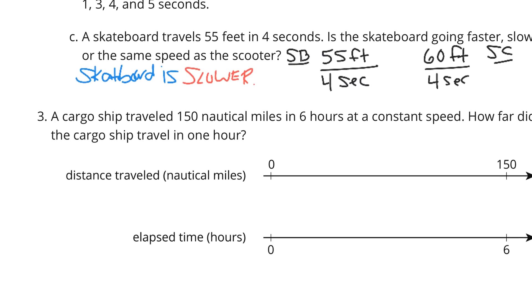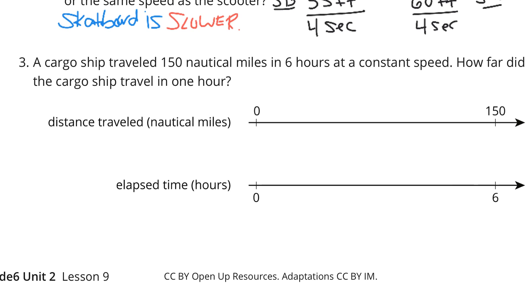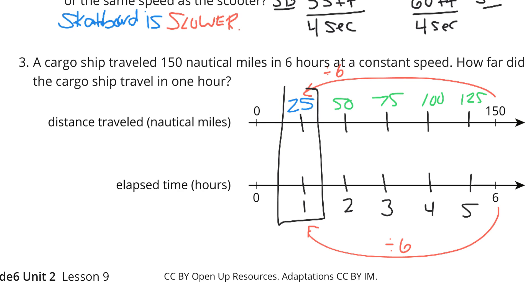Question 3. A cargo ship traveled 150 nautical miles in 6 hours at a constant speed. How far did the cargo ship travel in 1 hour? Well, a couple different ways of getting there. You could go 1, 2, 3, 4, 5, 6 and break it down here. But what I would simply do is, from 6 to 1, I'm dividing by 6. So from 150 to this spot, I'm also dividing by 6. When I take 150 divided by 6, I get 25. And if you wanted, you could finish the number line: 50, 75, 100, 125. But basically, the ship travels 25 nautical miles in 1 hour.